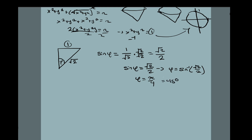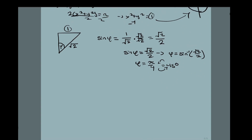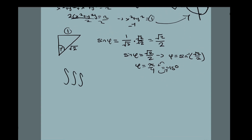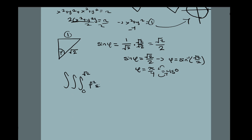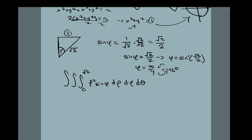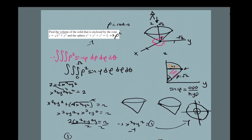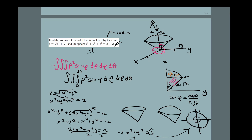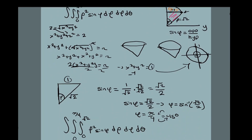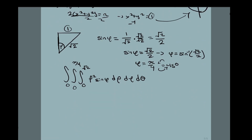So our second limit is φ from 0 to π/4 — it starts straight along the z-axis at zero and extends outward to π/4. For θ, since we're taking the entire cone all the way around the z-axis, θ goes from 0 to 2π. Our complete integral for the volume of this region is now set up.